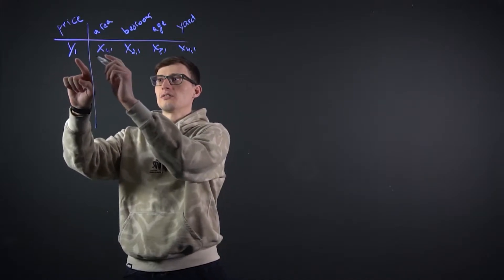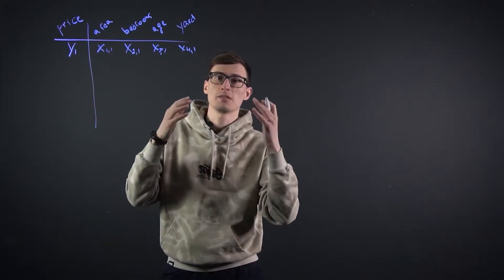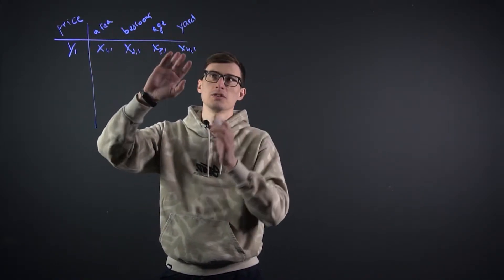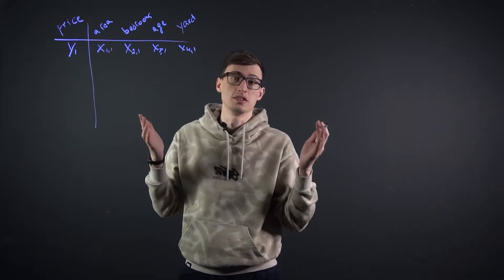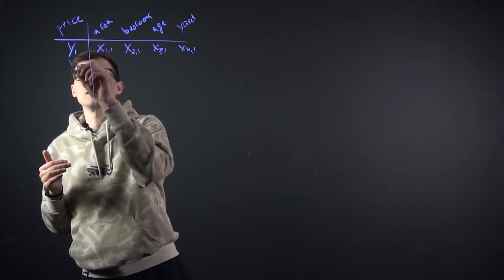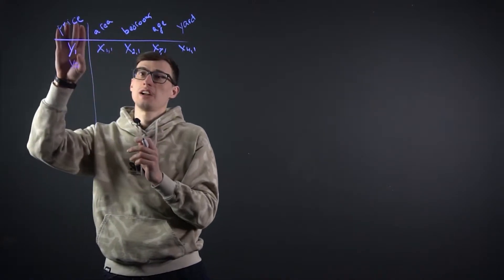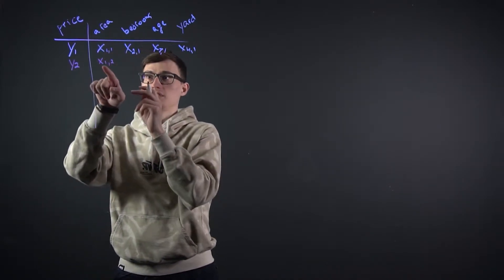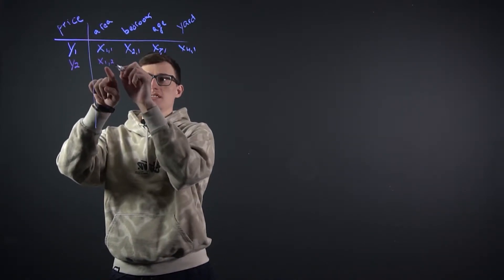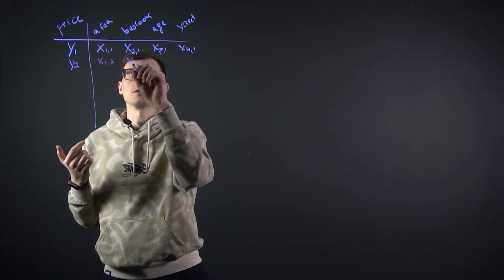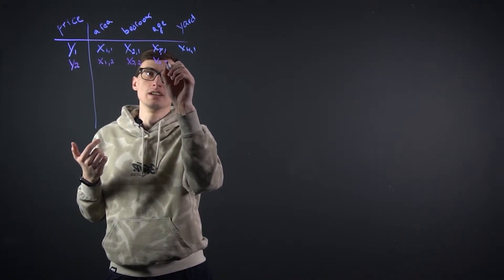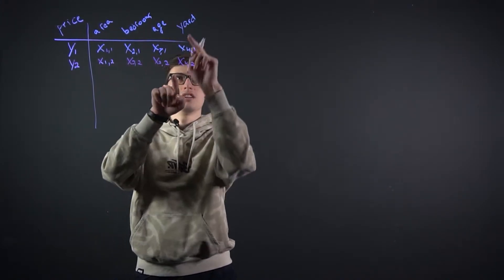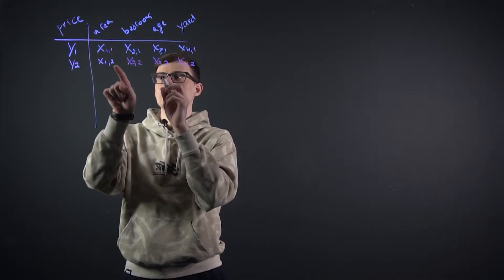The reason I wrote 1 everywhere is that's our first observation — our first house. It has some square feet, some bedrooms, it's whatever years old, and it has a yard. Maybe it doesn't, so this would just be zero. Now we have our second observation, y2 — another house that costs something. We have x1,2 for the first variable of the second observation, then x2,2; x3,2; and x4,2. So it's the same variables — area, bedrooms, age, and yard — but now it's the second observation everywhere.